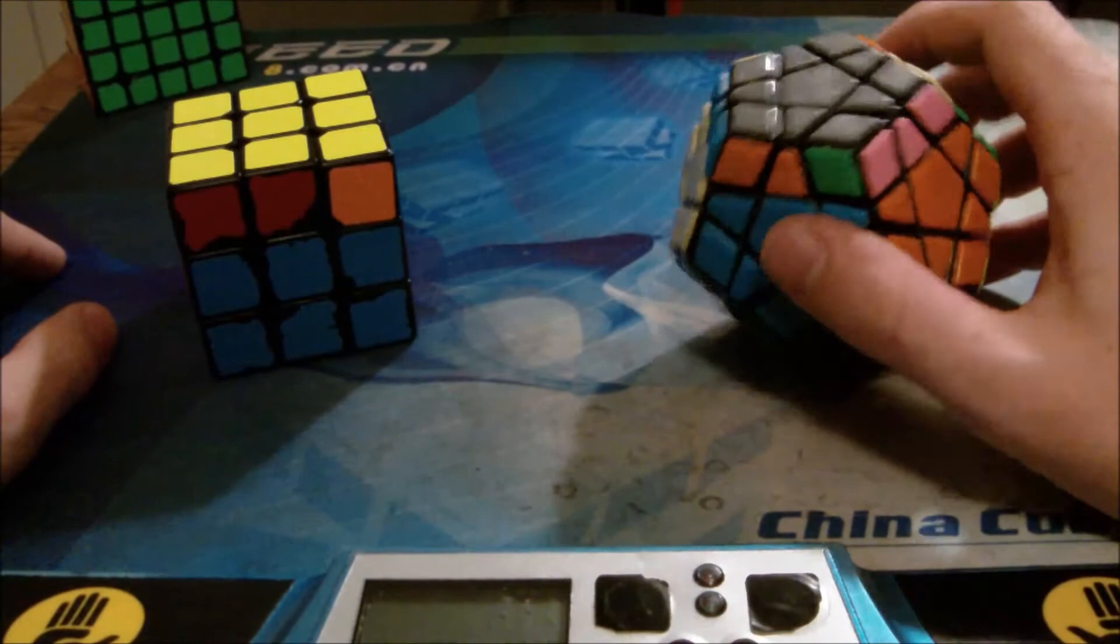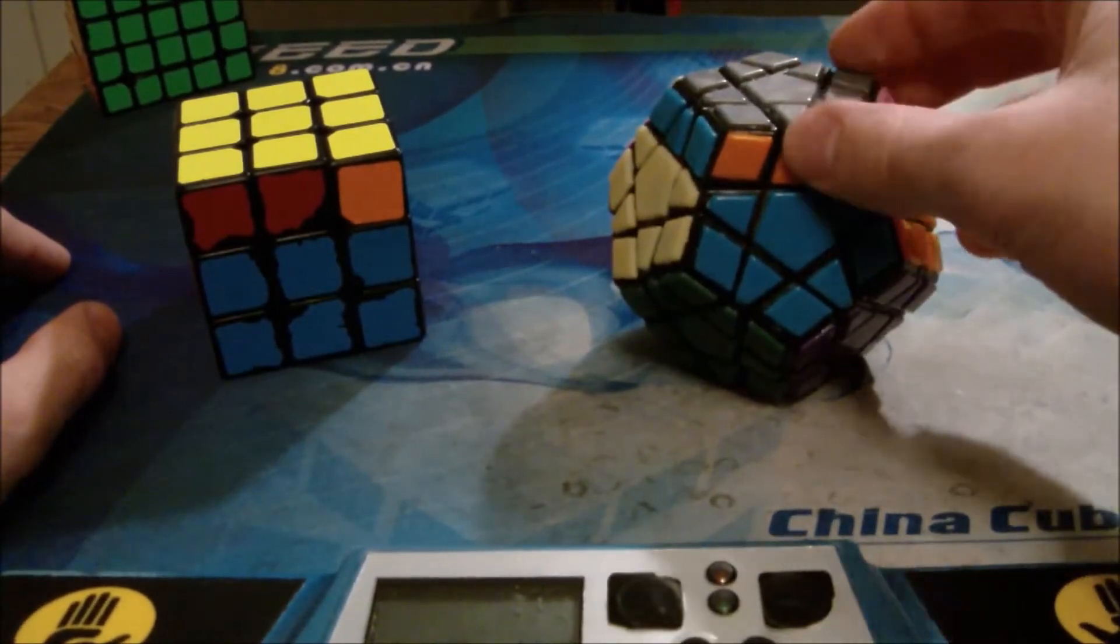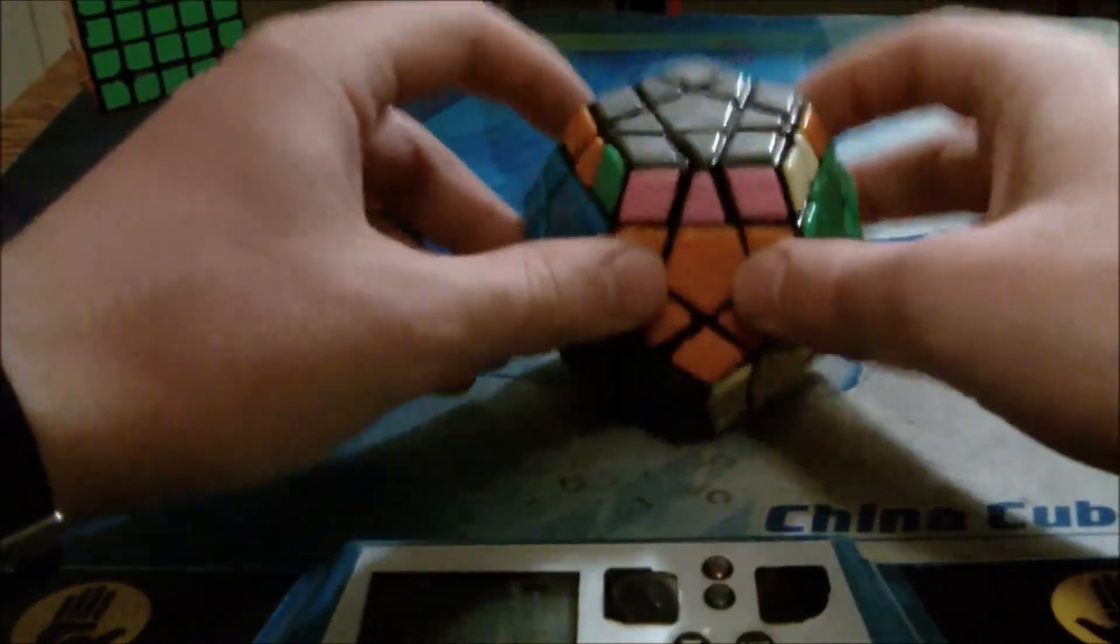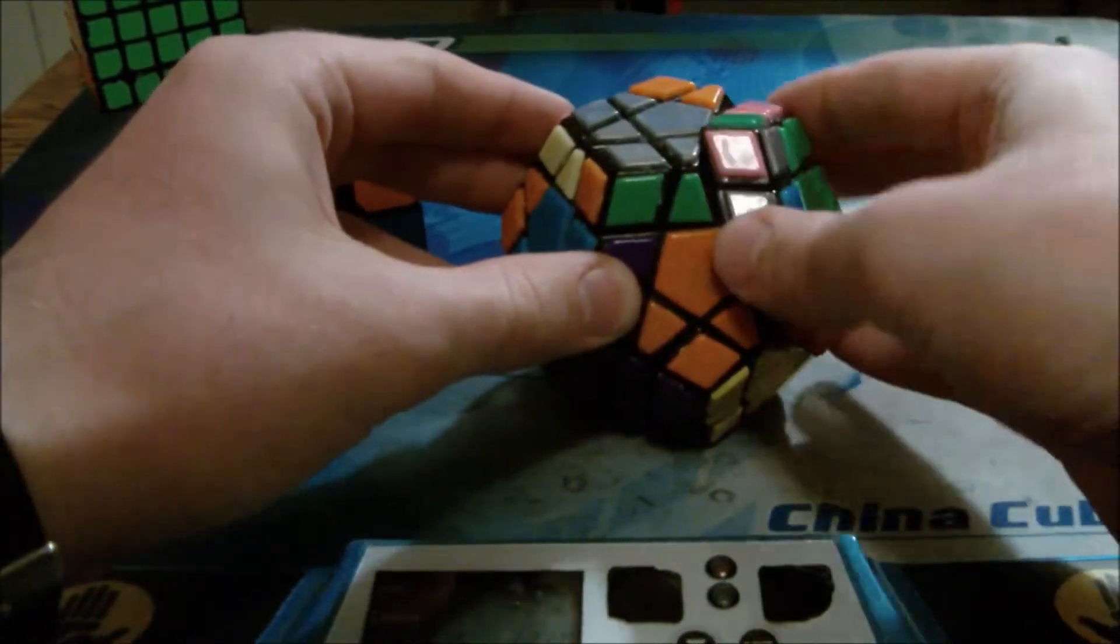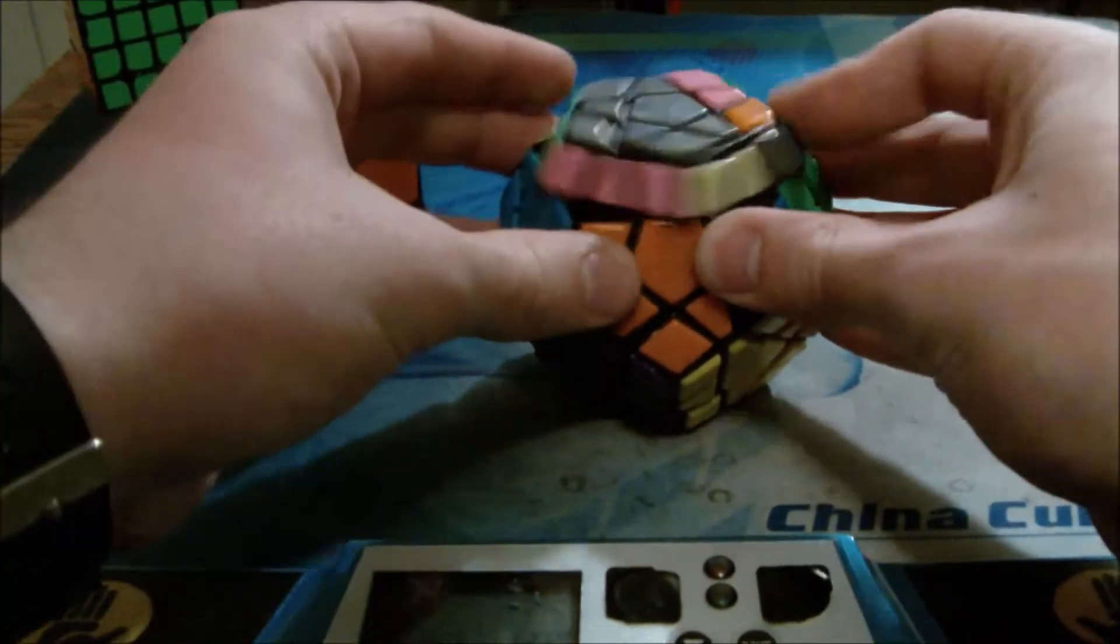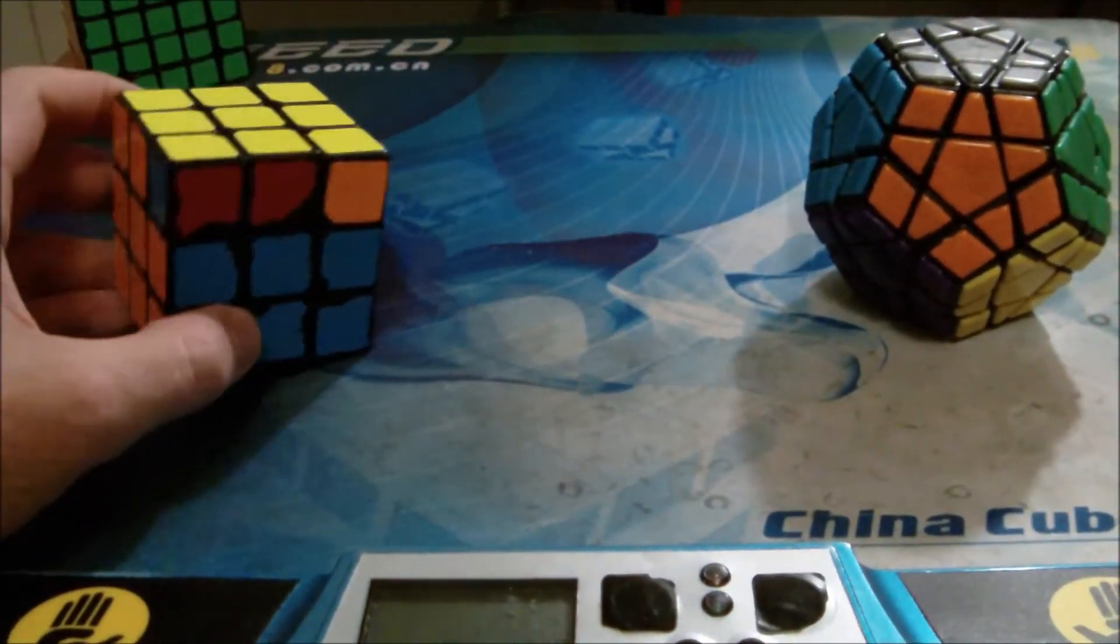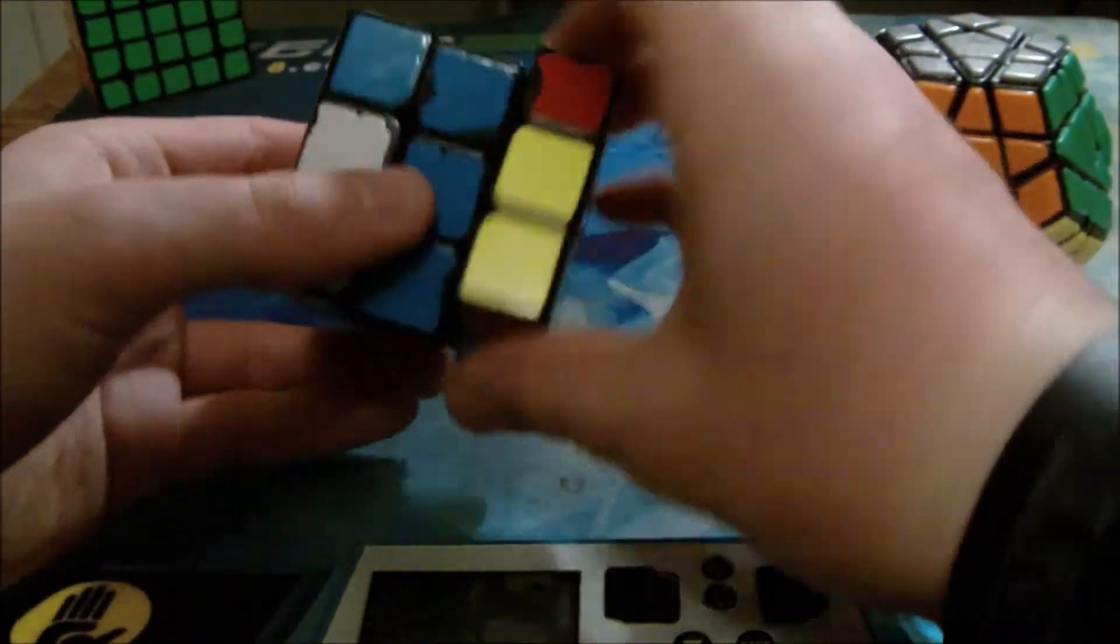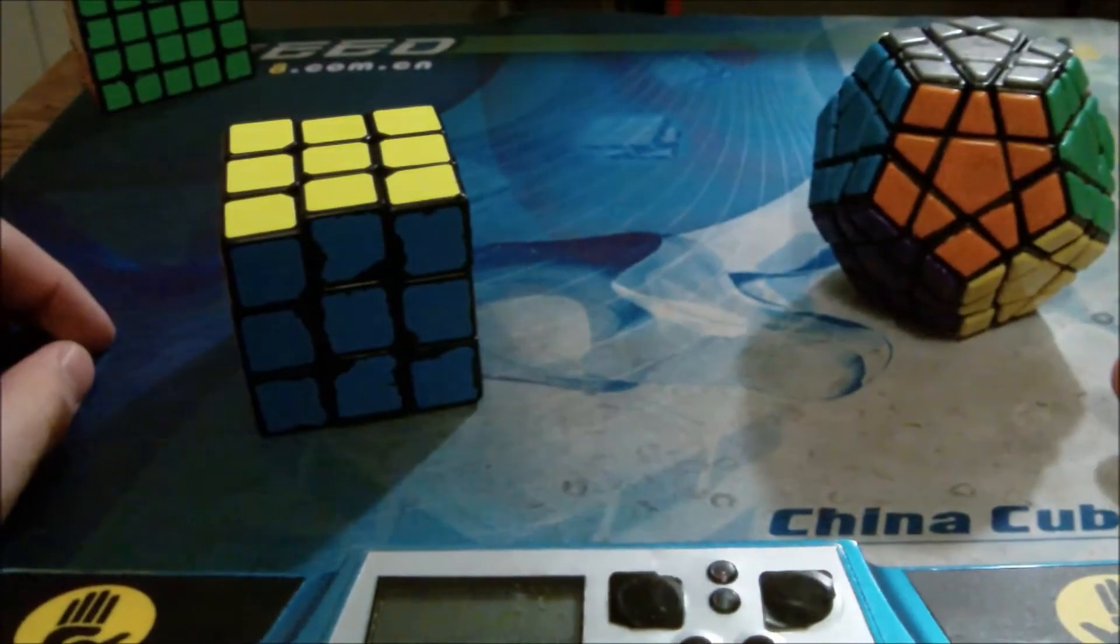It should work on Megaminx, as long as it's like R-U-L moveset. But this is the one I use. I put it on the table, and then I do this. Same as my J-perm for 3x3. It's just for 3x3 I do a rotation like this.